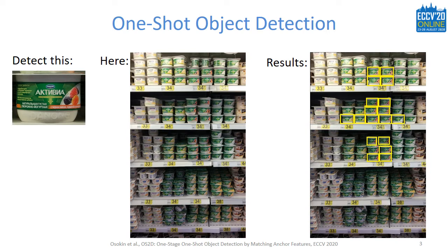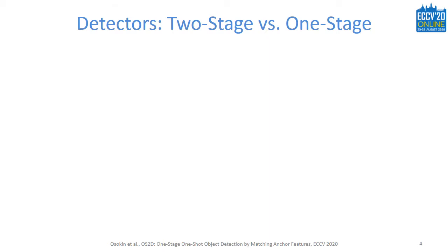We go by the path of one-shot detection. The goal is to detect objects of classes never seen at training. Our main motivation is the domain of detecting products on supermarket shelves, where it is difficult to collect and maintain a dataset covering all classes of interest because the assortment of supermarkets is vast and changes over time.